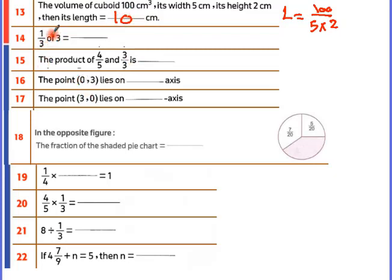1 over 3 of something — 'of' means times. So 1 over 3 times 3: divided by 3 gives 1, divided by 3 gives 1, equals whole 1. The product means times. Since 3 over 3 equals whole 1, anything times 1 equals itself, so the answer is 4 over 5.